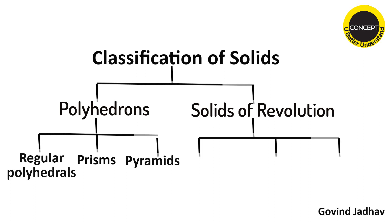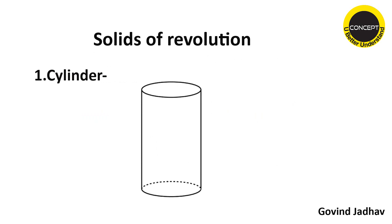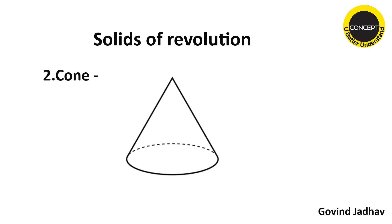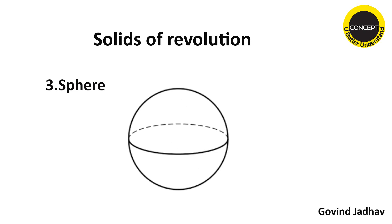Cylinder is obtained by revolving a rectangular plane about one of its sides through 360 degrees. A cone — a right circular cone — is obtained by revolving a right-angled triangle about one of its right-angle sides through 360 degrees. A sphere is obtained by revolving a semicircle about its straight edge, that is the diameter, through 360 degrees. Alternatively, a circle is revolved about its diameter through 180 degrees.